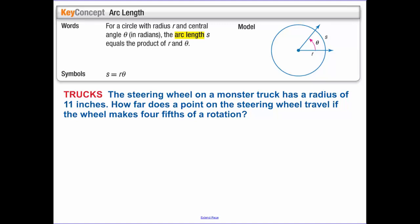Okay, arc length. For a circle with radius r and central angle theta in radians. That's key. Theta has to be in radians. The arc length, so the actual measure of that in like feet, is s equals r theta. Okay. It's a pretty simple formula.